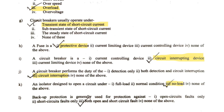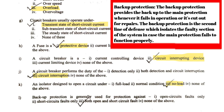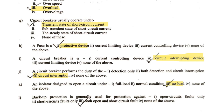The last MCQ: backup protection is generally used for protection against what? Backup protection is a type of protection in the power system that activates if the primary protection was not able to do its job — it is a backup when primary protection fails. Whatever the primary protection can do, the backup protection can also do. So both open and short circuit faults will be protected, and option three is the correct answer.